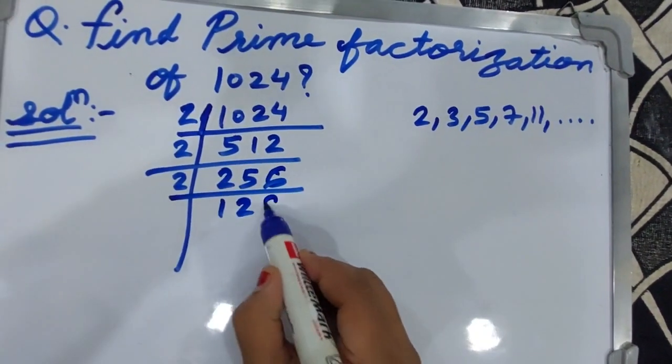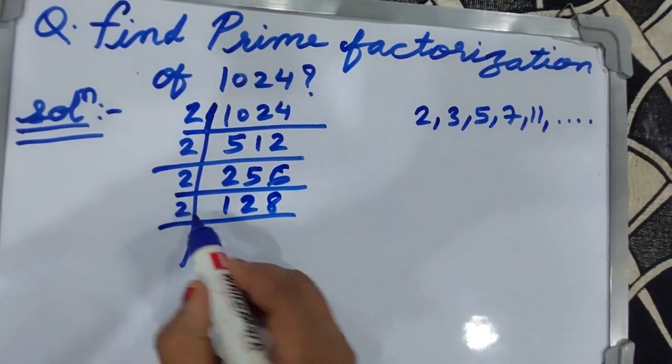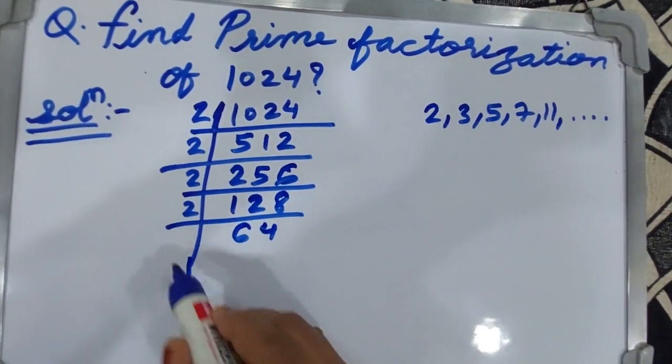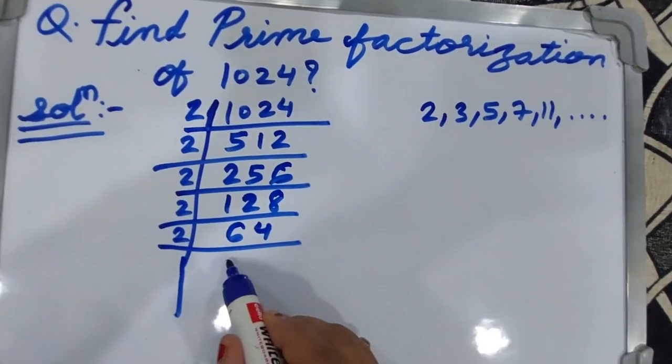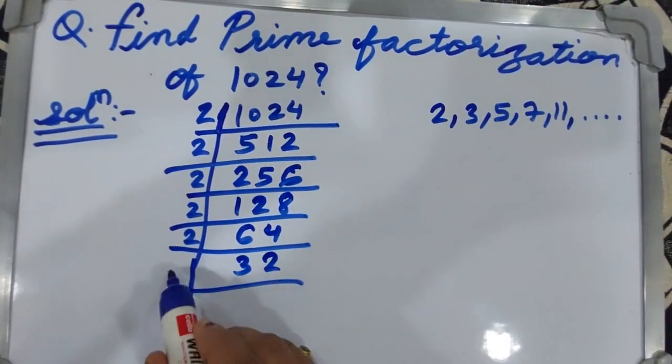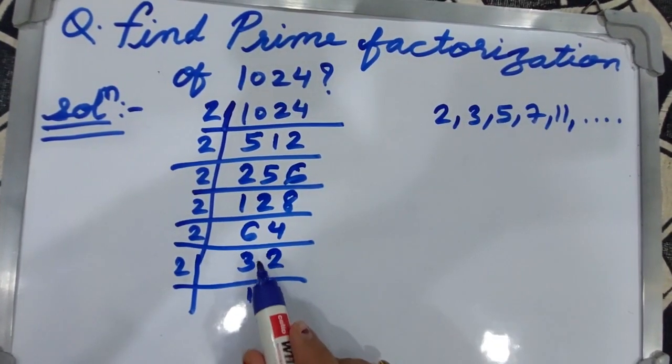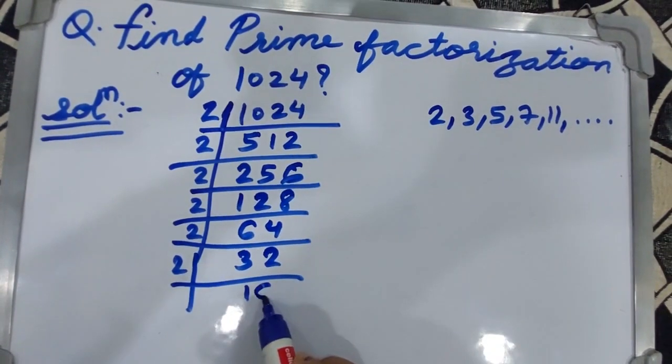It becomes 16. 2 eights are 16. Then 2 twos are 4, 2 fours are 8. Then 2 threes are 6, 2 twos are 4, 2 ones are 2, then 1 remaining, it becomes 12.